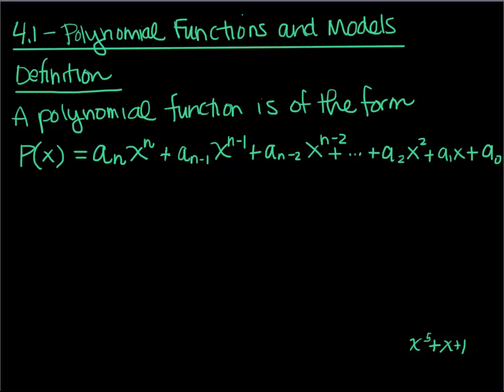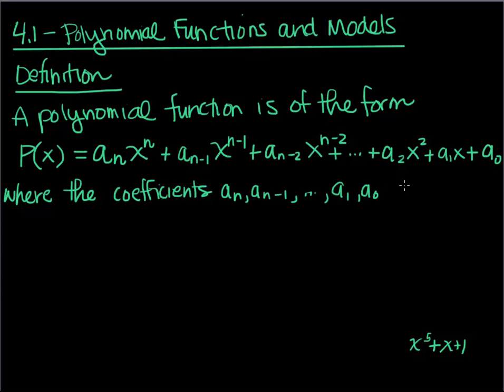So this is the polynomial function is of this form. You don't really need to know this form. I just wanted to kind of get you used to seeing a form. This is a very mathematical definition. So a polynomial function is of this form, where the coefficients, so what are the coefficients? The coefficients are those numbers in front of the x term. So the coefficients a sub n, a sub n minus one, dot dot dot, all the way until the last couple, these must be real numbers.